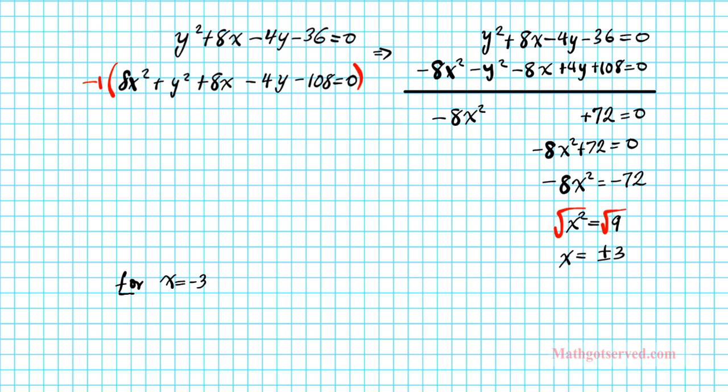So for x = -3, we're going to end up with the quadratic equation y² + 8(-3) - 4y - 36 = 0. So one of the solutions we got here, we're plugging it into the first equation.